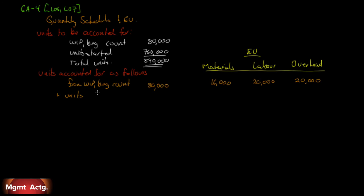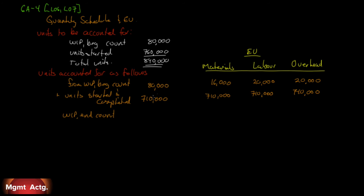We add units started and completed. We're told 790,000 units were transferred out, but 80,000 were already in beginning WIP, so we started and completed another 710,000. Since they're 100% complete, they count as 710,000 equivalent units for all three cost categories. Then we have our work in process ending count. These two totals must match: 790,000 transferred plus the ending count should equal 840,000, so ending WIP is 50,000 — which the data confirms.